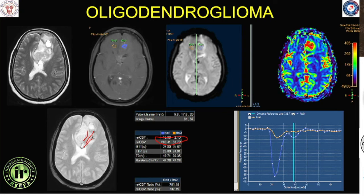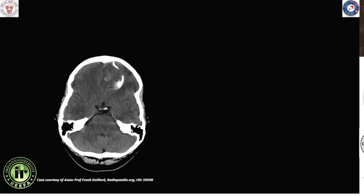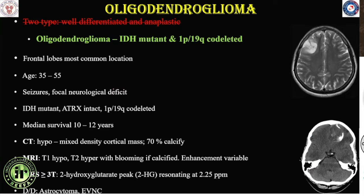This is an IDH mutant oligodendroglioma. When you say a diagnosis of oligodendroglioma, it is implied that it is associated with 1p19q co-deletion. A companion CT scan case also shows the chicken wire calcification associated with oligodendroglioma. This is another tumour wherein seeing all these features allows one to prospectively make a diagnosis of its molecular landscape.